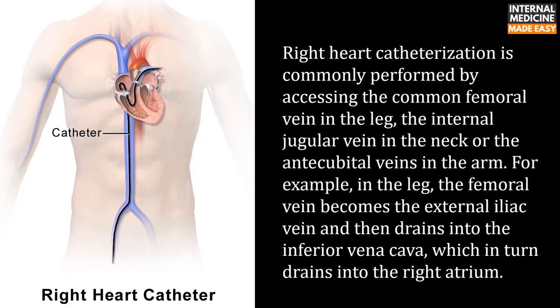Right heart catheterization is commonly performed by accessing the common femoral vein in the leg, the internal jugular vein in the neck, or the antecubital veins in the arm. In the leg, the femoral vein becomes the external iliac vein and then drains into the inferior vena cava, which in turn drains into the right atrium.